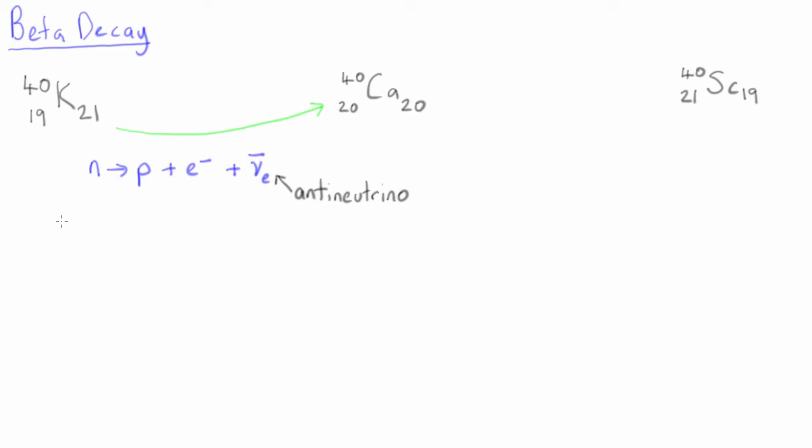We call the emitted particles the decay radiation. The emitted electron is called a beta-minus particle, and this process is a beta-minus decay.